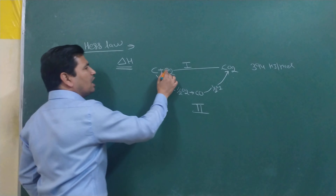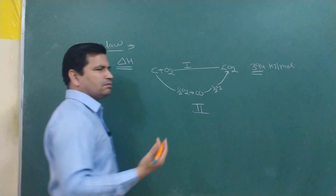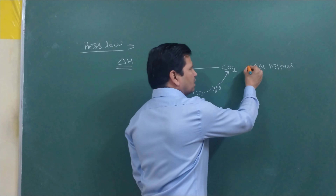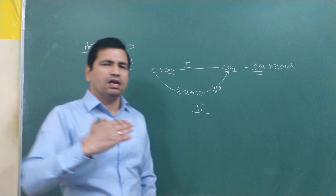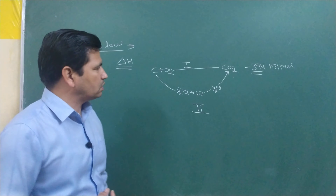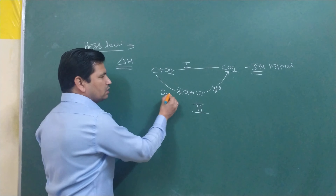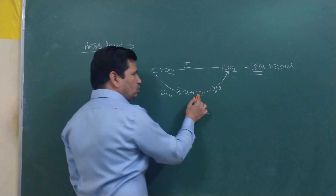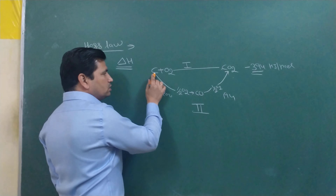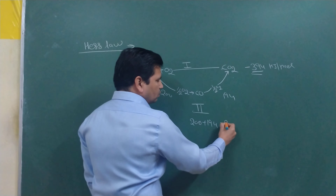Now, from C plus O₂ directly to CO₂, the energy released is 394 kJ. Since energy is released, delta H is negative: minus 394. For the second path, C to CO releases 200 kJ, and CO to CO₂ releases 194 kJ. So 200 plus 194 equals 394.